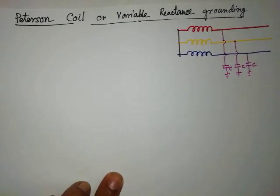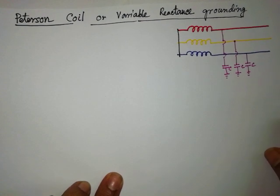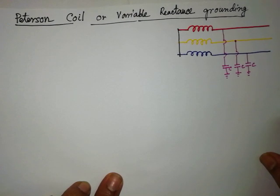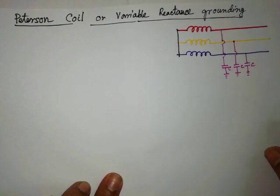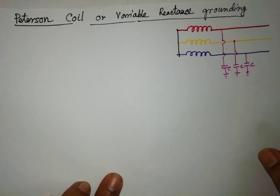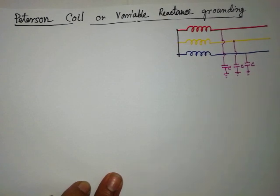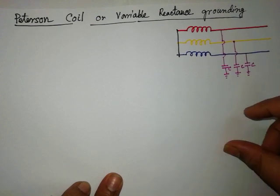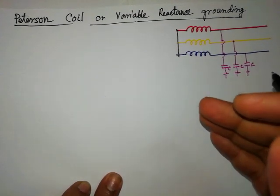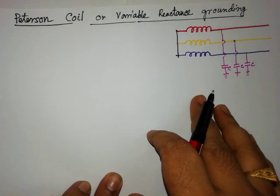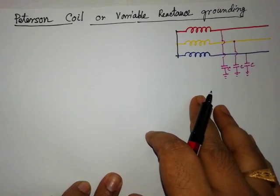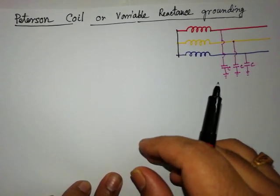Good morning friends, welcome again. Today I will discuss about the Peterson coil, that is actually variable reactance grounding. In my previous lecture I discussed about the method of neutral grounding — solid grounding, resistance grounding, and reactance grounding. This is the extension part of the reactance grounding where we'll use a variable reactance in the path of the grounding.